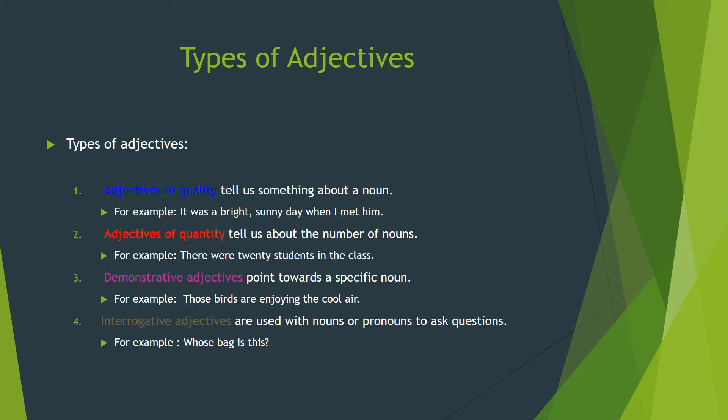The second type is adjectives of quantity. These adjectives tell us about the number of nouns — how many the nouns were or how much the noun was. For example, 'There were 20 students in the class.' 'Students' is the noun, and how many students were there? They were 20. So '20' is the quantity and at the same time it is the adjective of the noun 'students.'